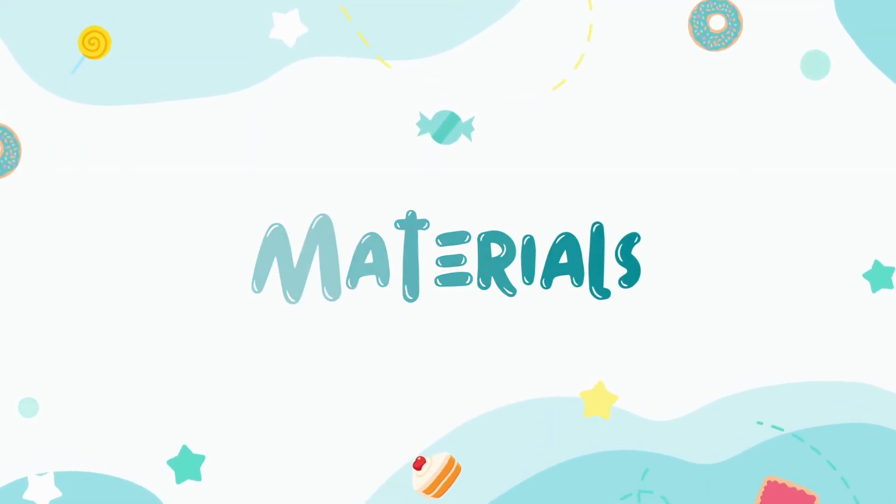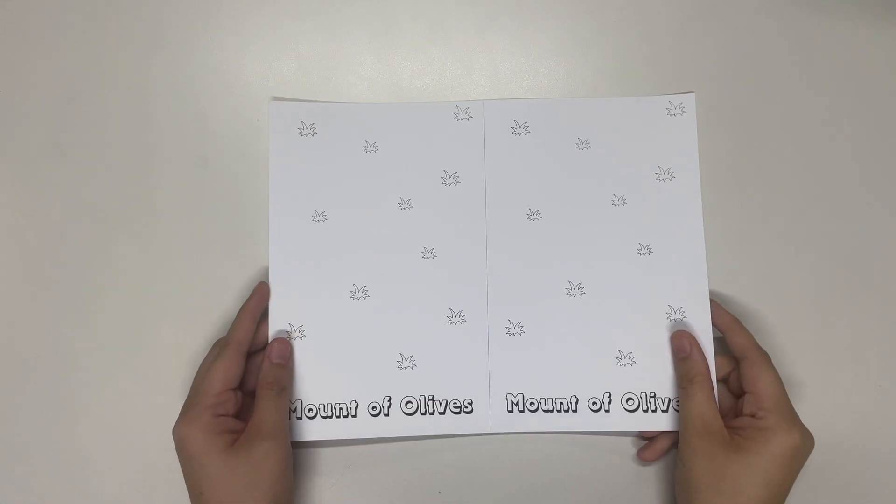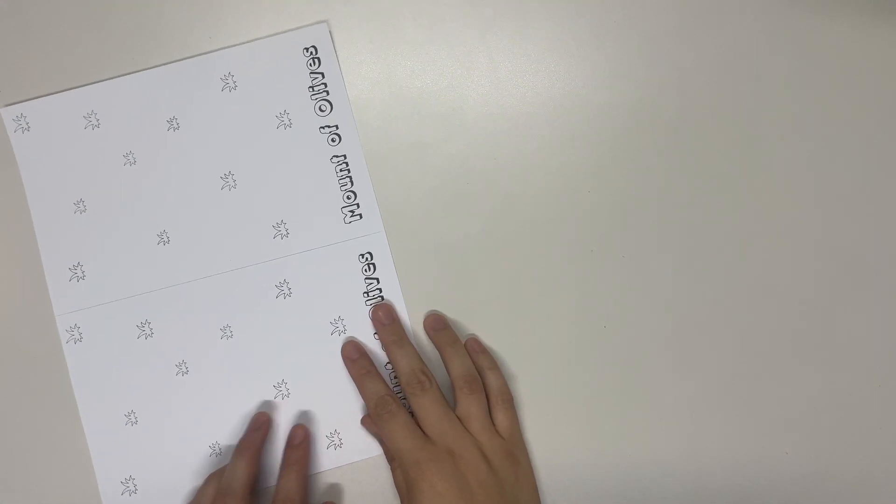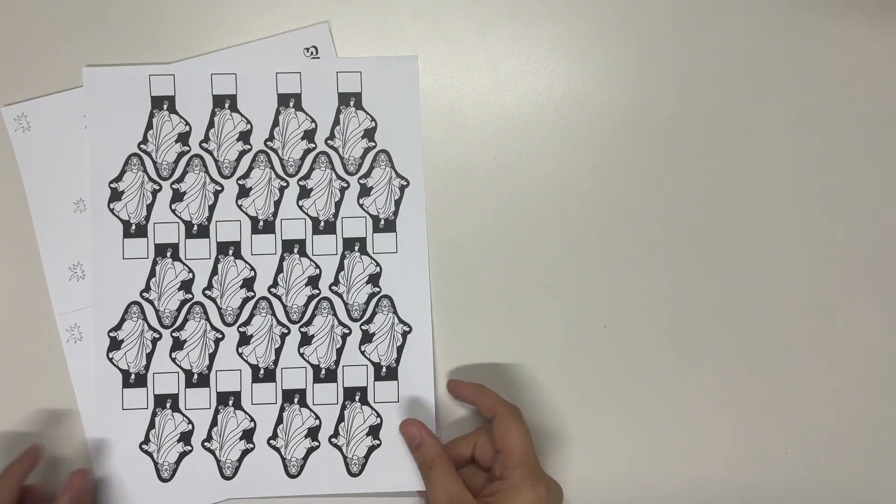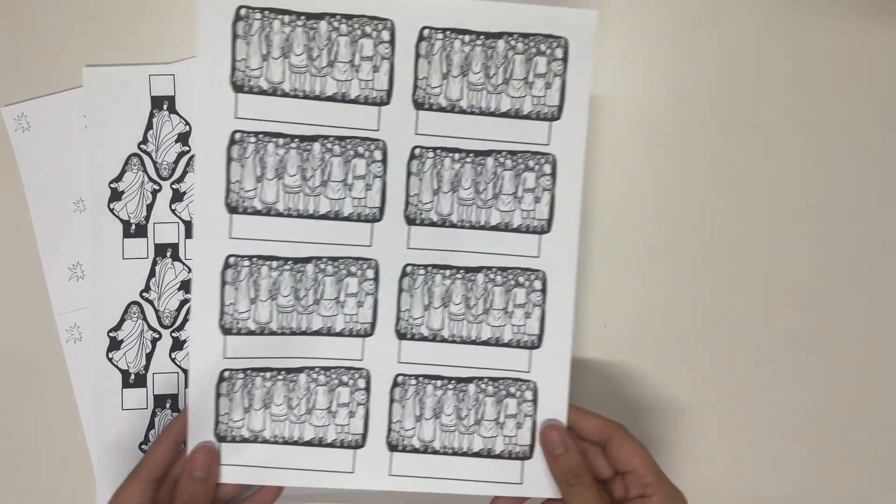Now, for this craft, we will need the following materials. First is the base. So this makes two pieces. Next is Jesus ascending and the crowd.